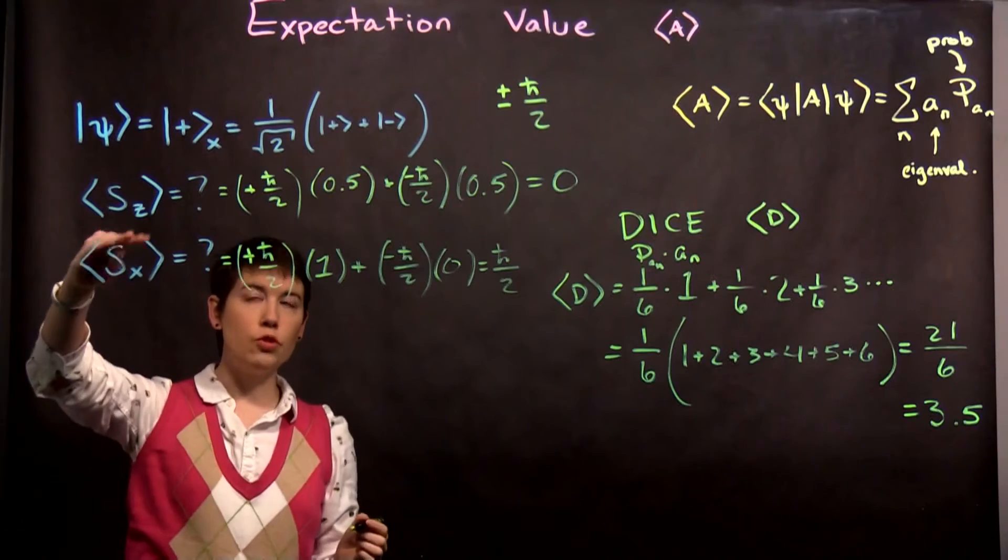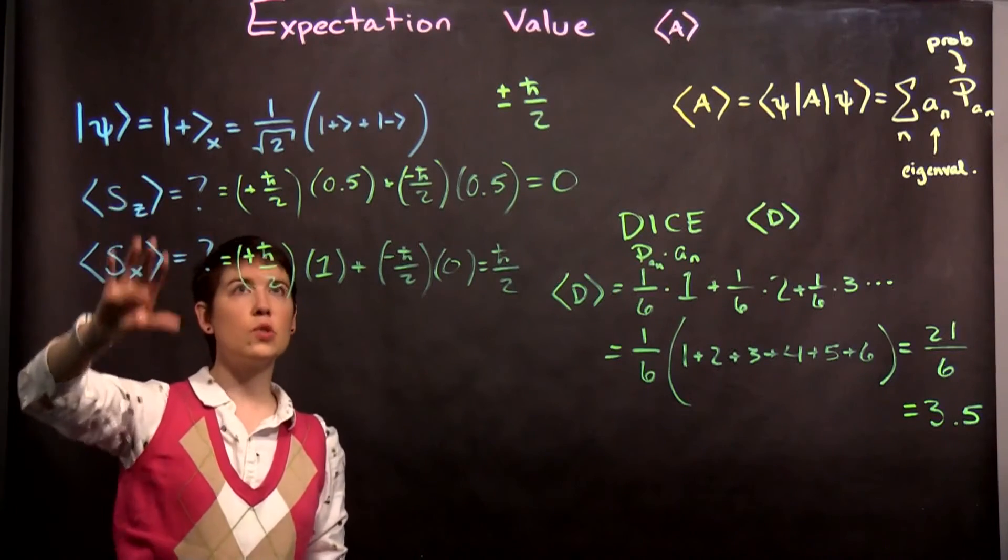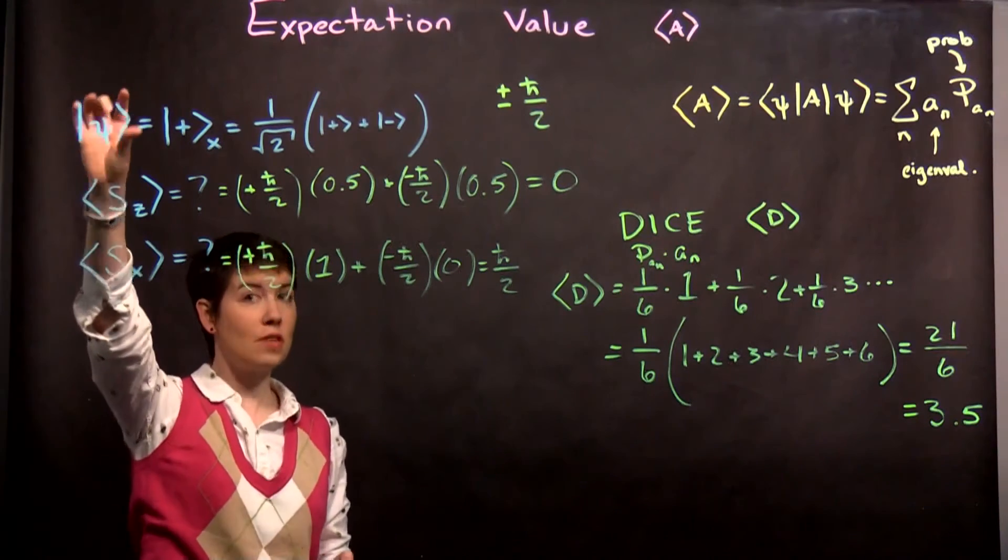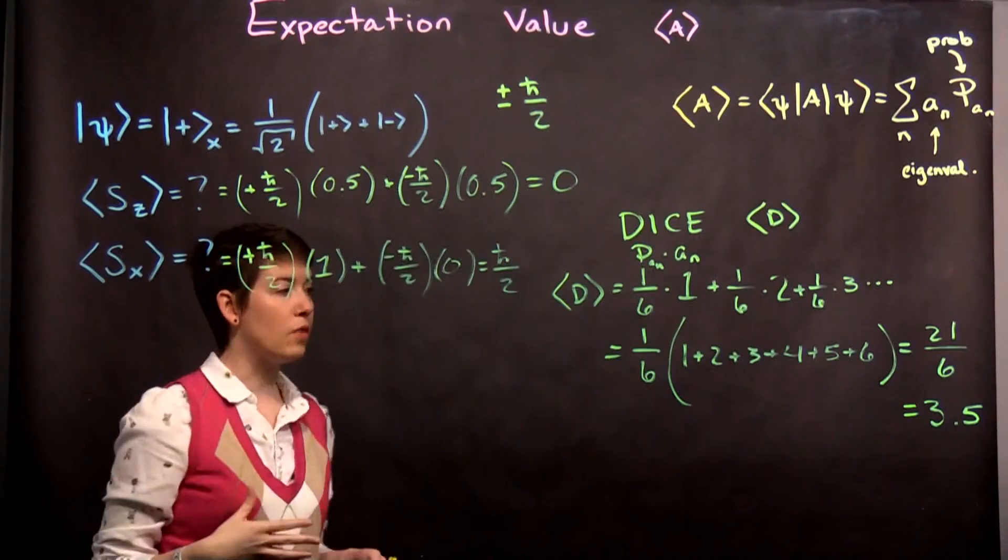When you're talking about expectation value, it's of a measurement, of an operator. Because in these two situations, it was in fact for the same state, but because we're asking about different measurements, different operators, we got different values.